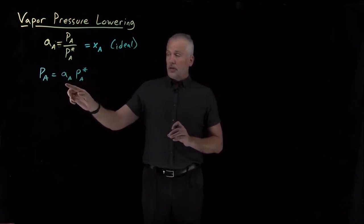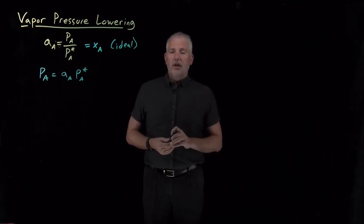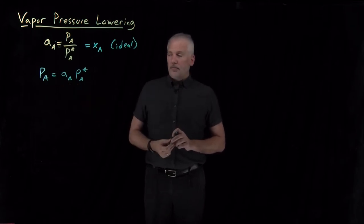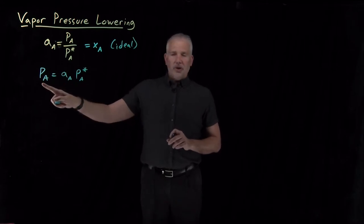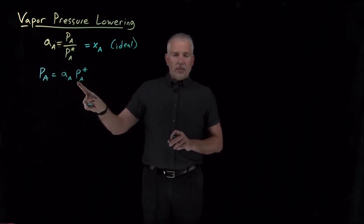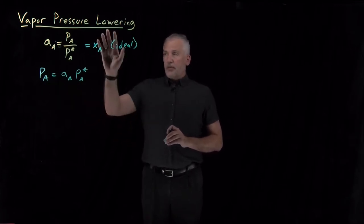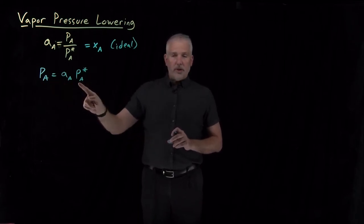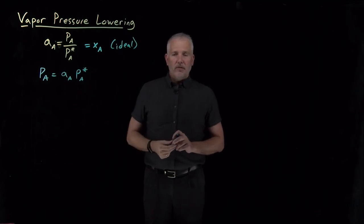For a pure solution, the activity is one. Activity represents how active the solvent is relative to the pure solvent, so the activity is going to be less than one if the solution is not pure solvent. If this number is less than one, the partial pressure is going to be less than the vapor pressure — the vapor pressure of the solution has been lowered relative to the pure solvent.